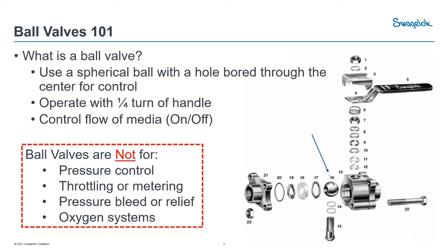Also avoid ball valves in oxygen systems. That fast shutoff with oxygen can cause fast adiabatic compression, which heats up your oxygen system. If you have anything potentially combustible, you can start a chain reaction fire. We try to avoid ball valves and instead go for a multi-turn needle valve so shutoff happens slowly and tempers that reaction. The biggest thing is to avoid any sort of throttling — ball valves should be full open or full closed at all times. Partial opening causes seat erosion and your valve will start leaking by.